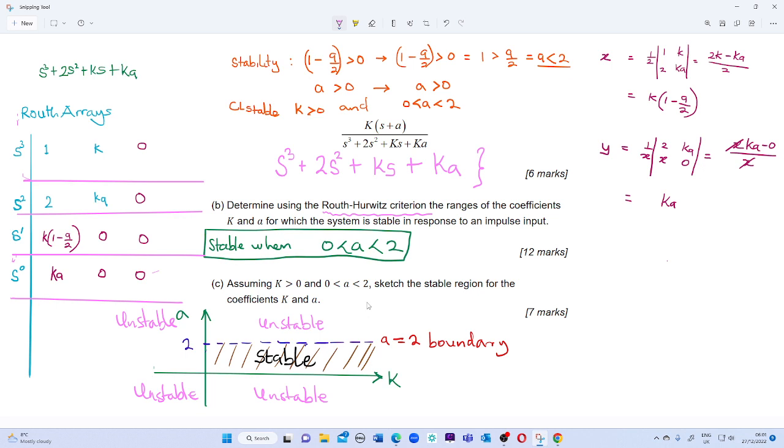Now today we have a closed loop transfer function equation: k times (s + a) over s cubed plus 2s squared plus ks plus ka. By pulling out the denominator, which is the one given here: s cubed plus 2s squared plus ks plus ka.